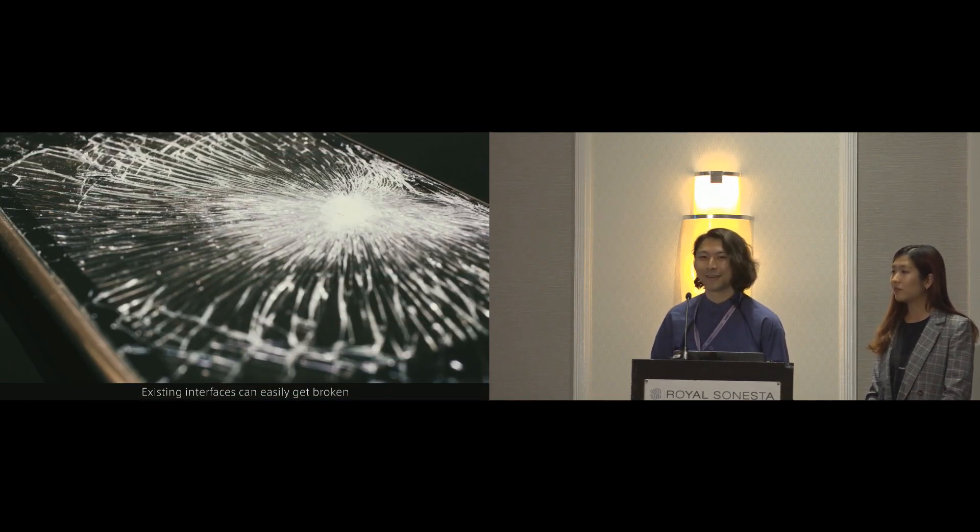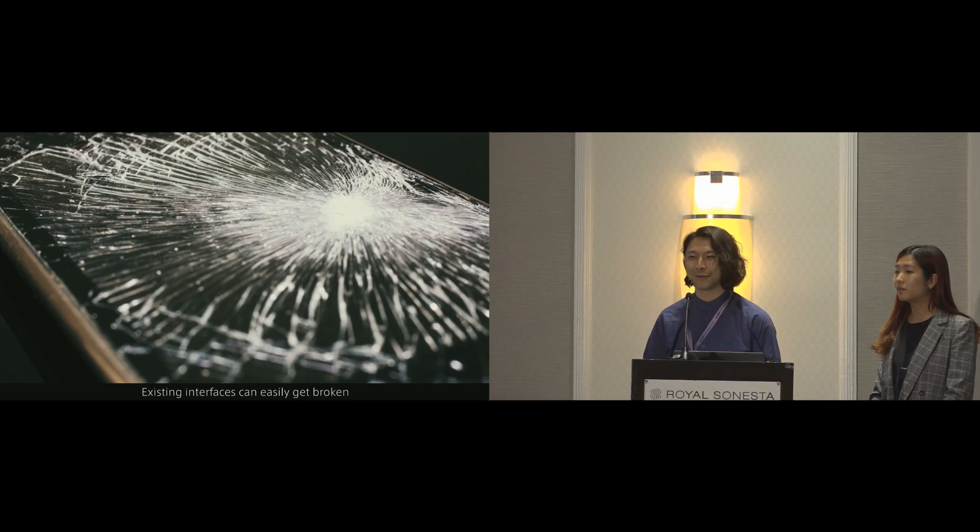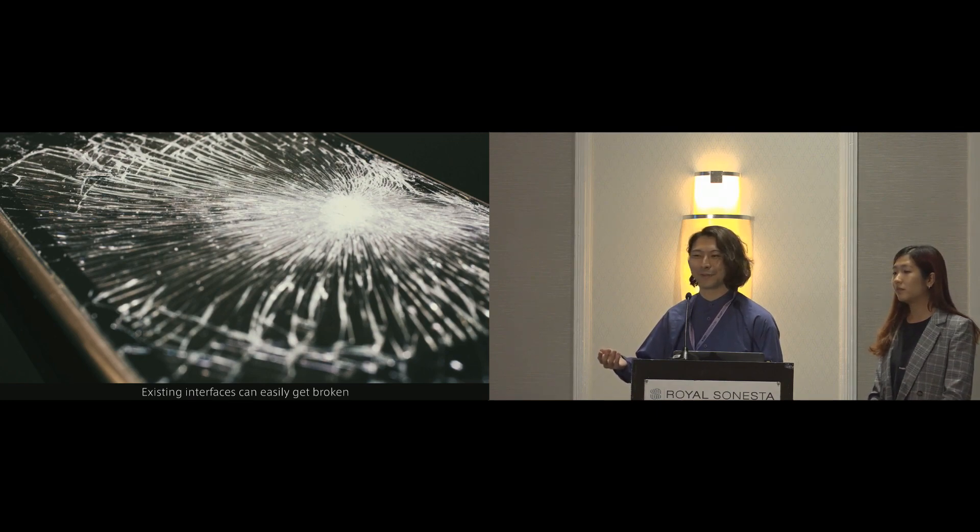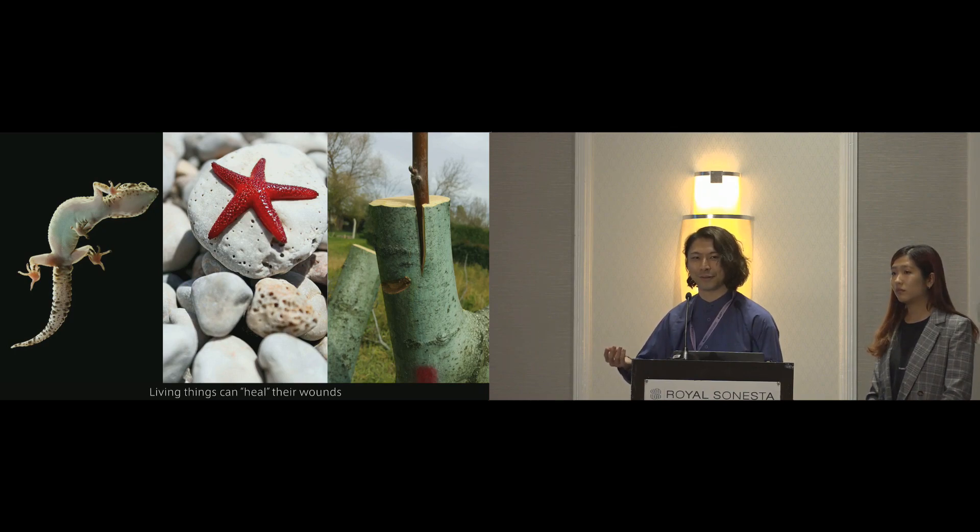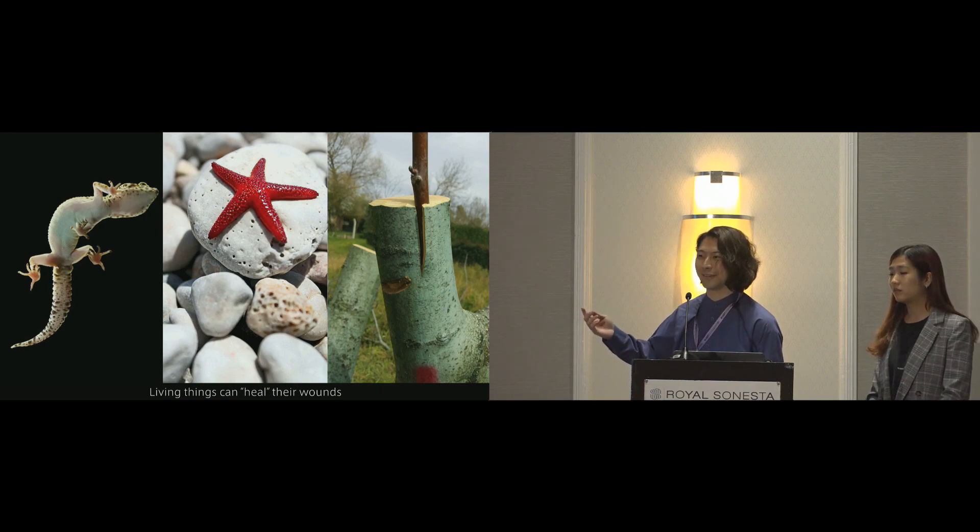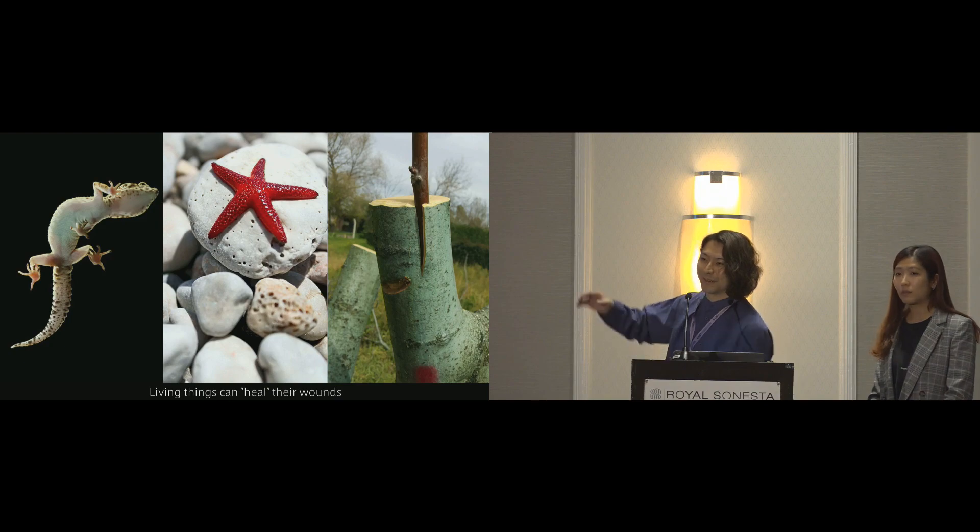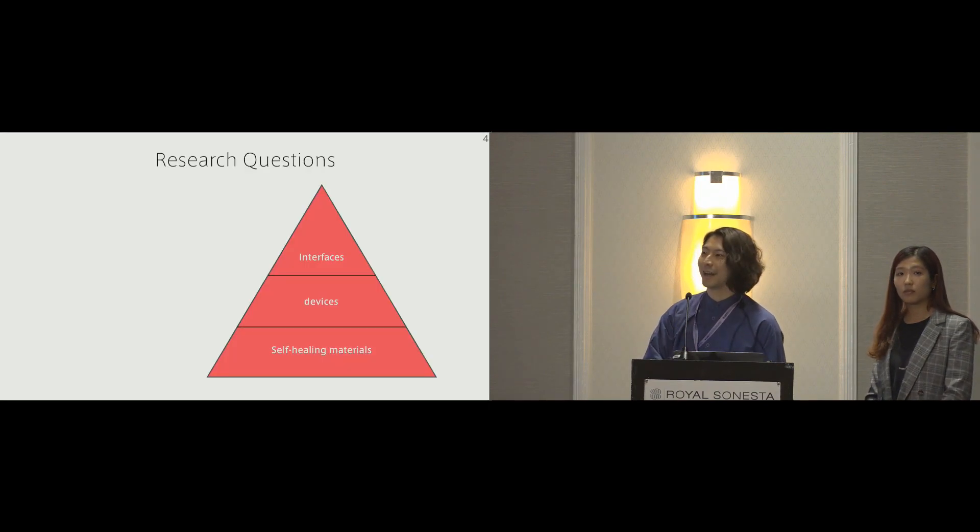As all of you know, existing interfaces work very robustly, but once broken, it's really hard to fix them. For example, my smartphone has a lot of cracks on both surfaces. But on the other hand, if you look around in nature, we see a lot of examples of living things healing their wounds. For example, geckos and starfishes can regenerate their tails and arms, and grafted trees can share nutrition even between different kinds of trees.